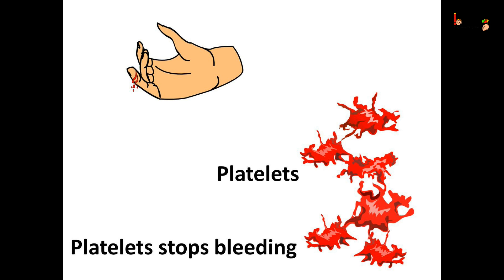When we get a cut, the blood flows out of the body and after some time the bleeding stops. A dark red clot plugs the cut. This is because of a kind of blood cell called platelets. These are colorless with an irregular shape, even smaller than the red blood cells.